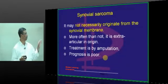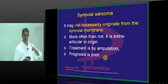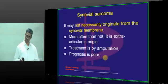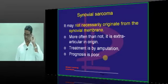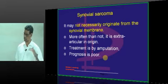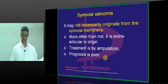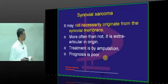It may not necessarily originate from the synovial membrane — more often than not it has an extraarticular origin, just like rheumatoid arthritis, which also has extraarticular manifestations. The treatment is by amputation, and the prognosis is poor.